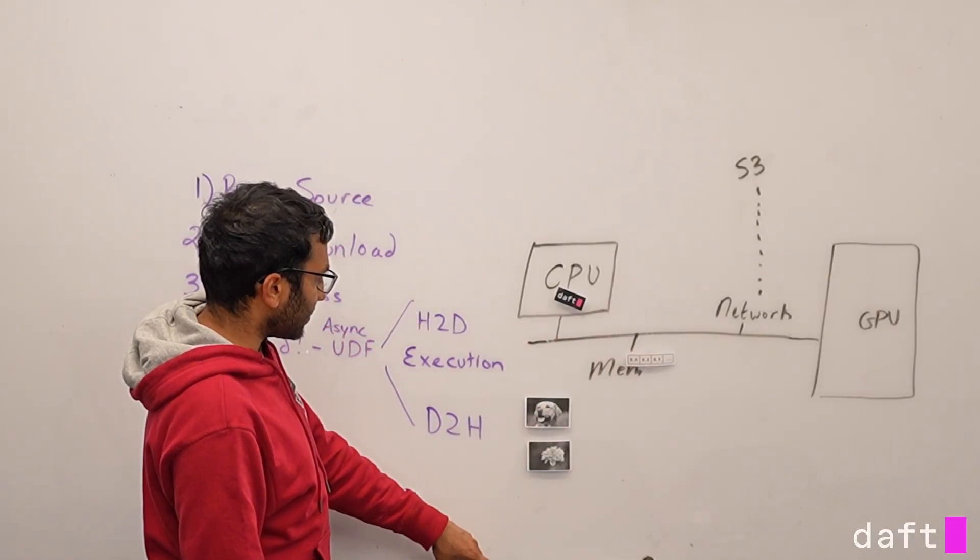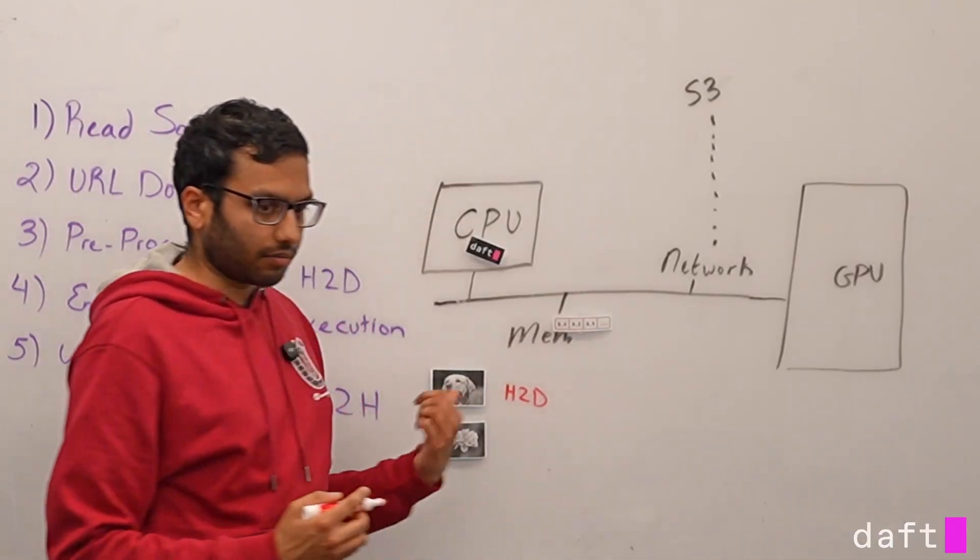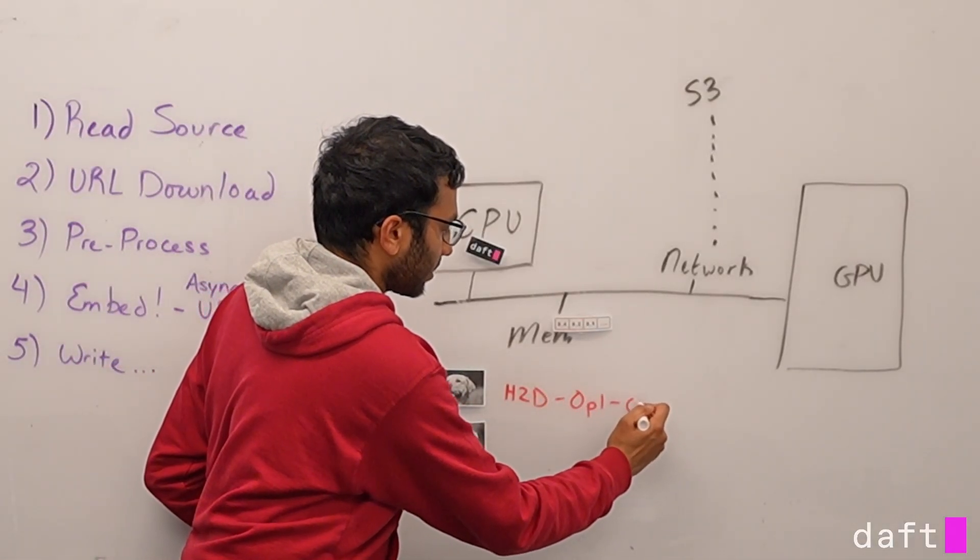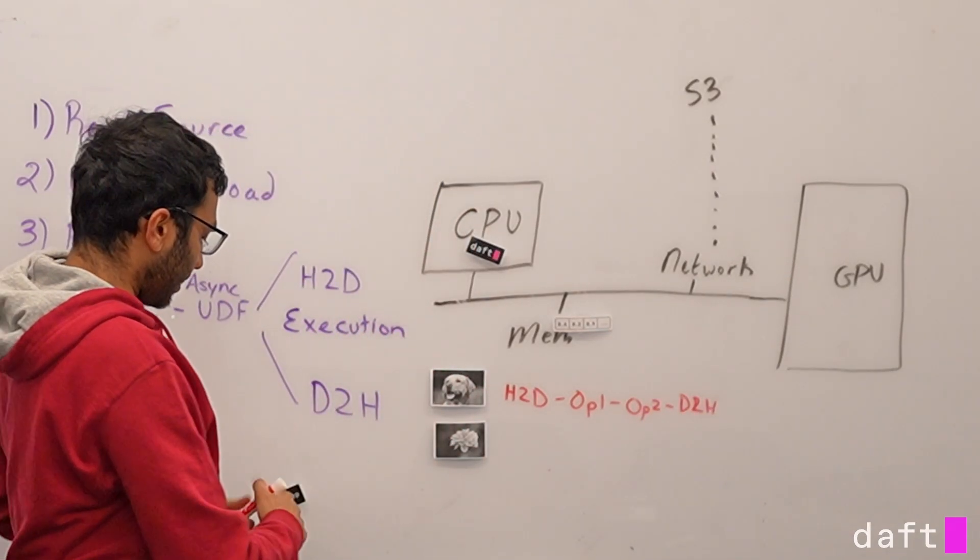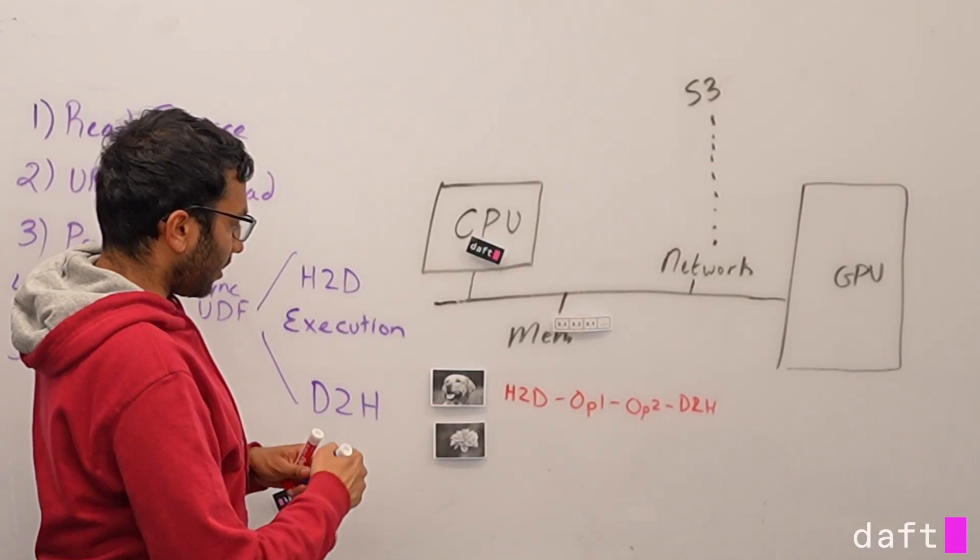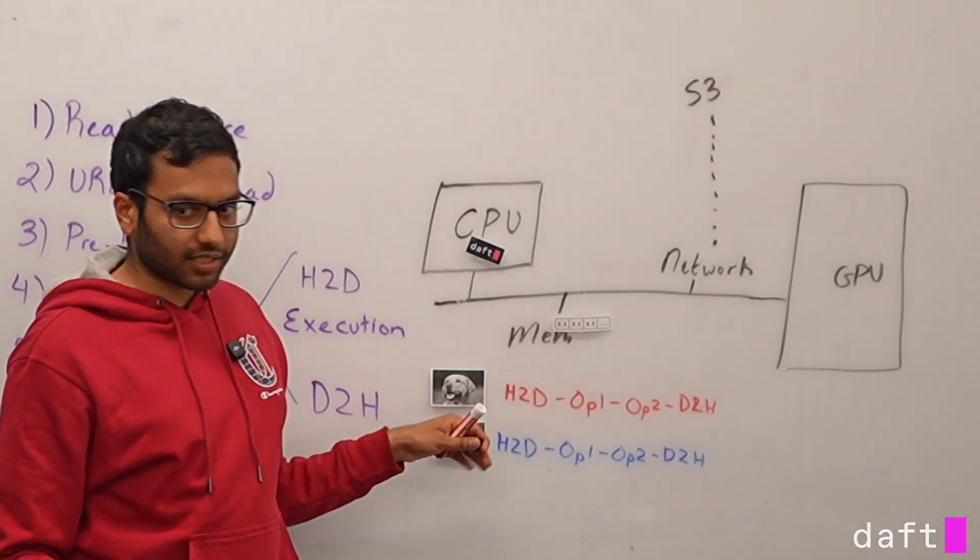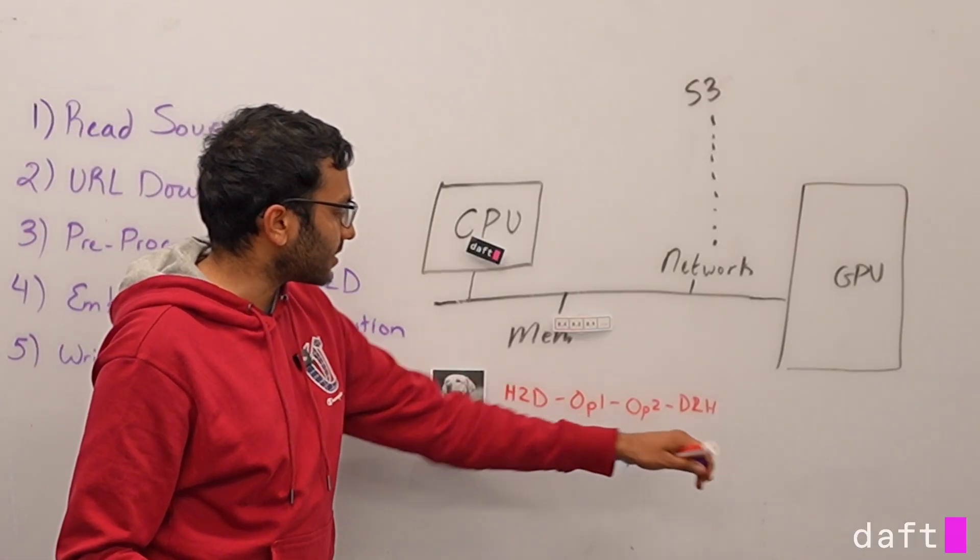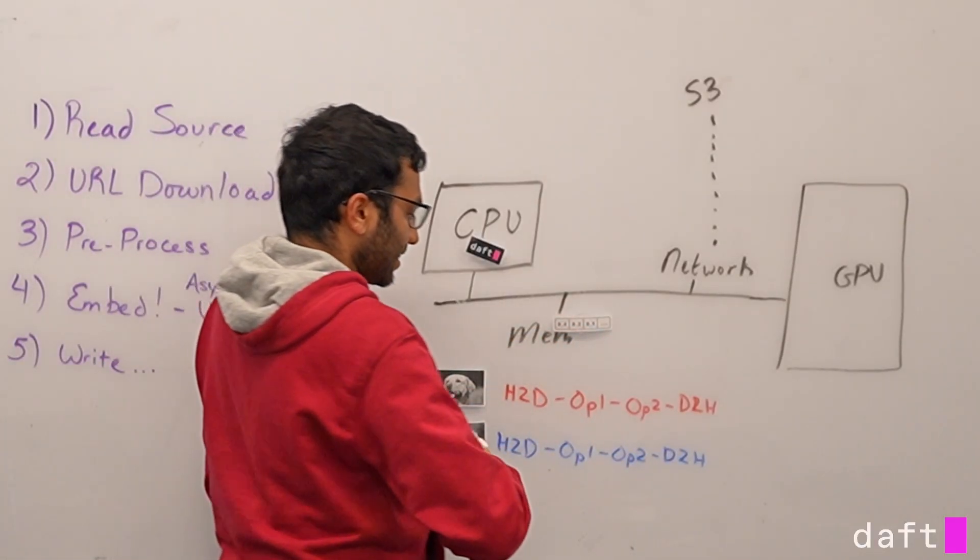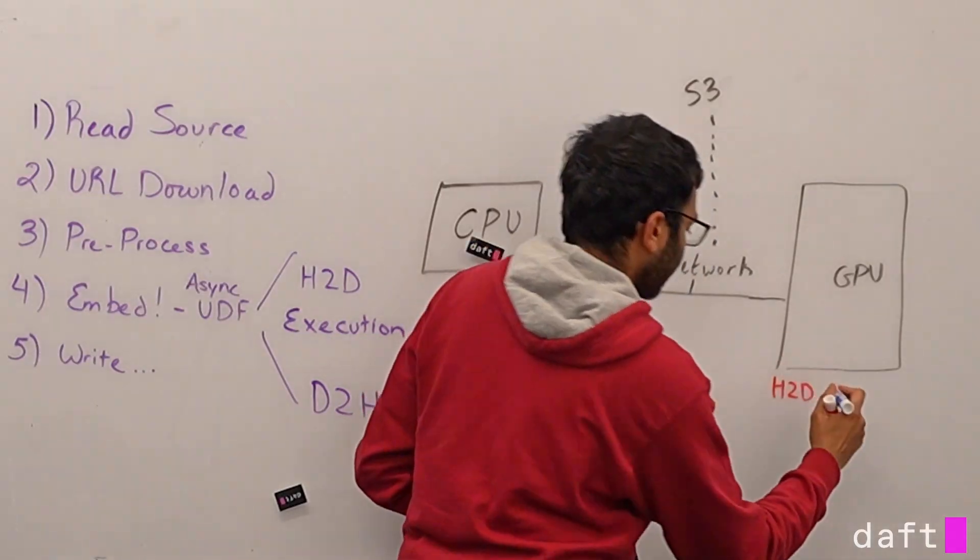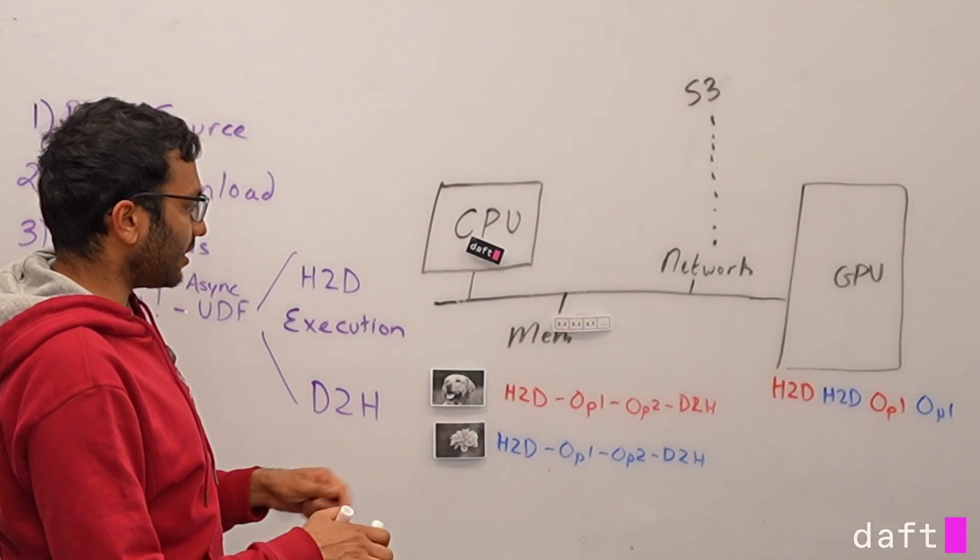Well, a GPU has a concept of a stream, which is basically just a queue of tasks that it needs to perform. And all it knows is that it just needs to perform those tasks in the order they appear in the queue. So with something like this, if we said that for each one of these images, we need to do the memory transfer, and we need to do some operator, and then some other operator, and then transfer back. And we have the exact same thing for the other image. This would be a set of operations that all depend on each other. So we have to do this step first, then this, then this, then this.